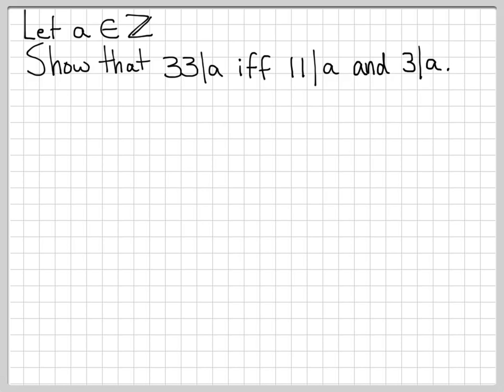So this is an if and only if type proof. We have two cases to work through. We need to show that when 33 divides a, this implies 11 divides a and 3 divides a. And we also have to go the other way. We have to show that when 11 divides a and 3 divides a, this implies that 33 divides a. So that's how we're going to set the problem up. We're going to do this one case at a time.